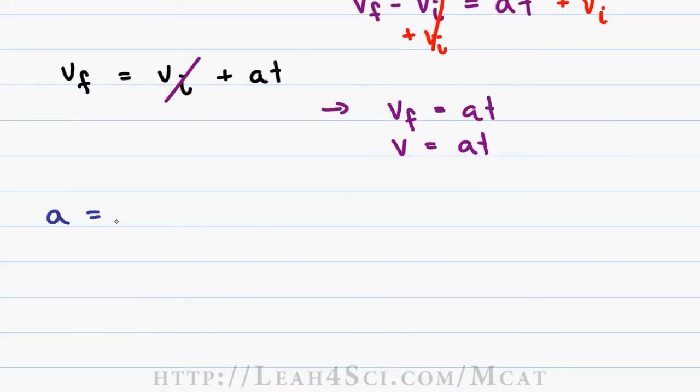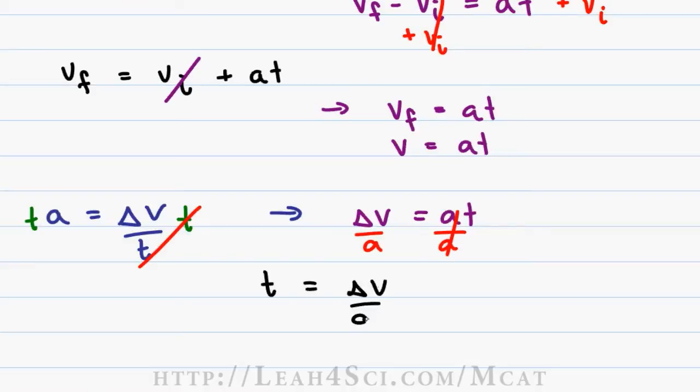Now let's say you're asked for time. To solve for time in the denominator, first thing we want to do is move it to the numerator. We'll multiply both sides to cancel it out. This gives us delta v is equal to a t. Now we want to isolate t so we'll divide both sides by acceleration, giving us a new version of the same equation t is equal to delta v over a.